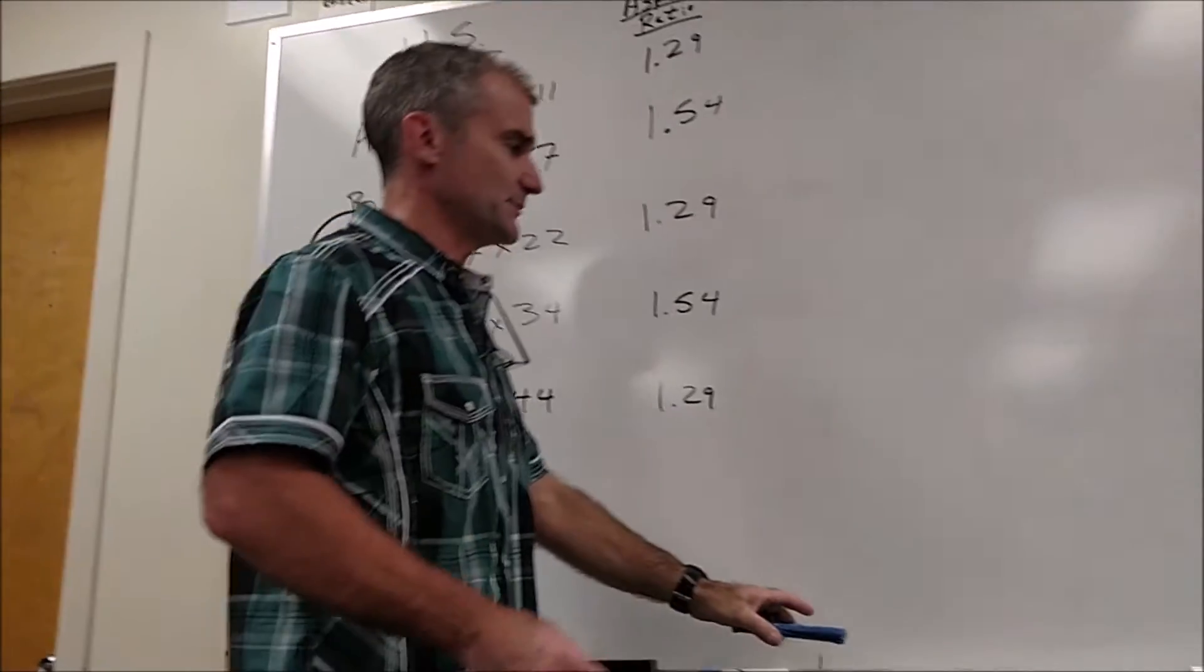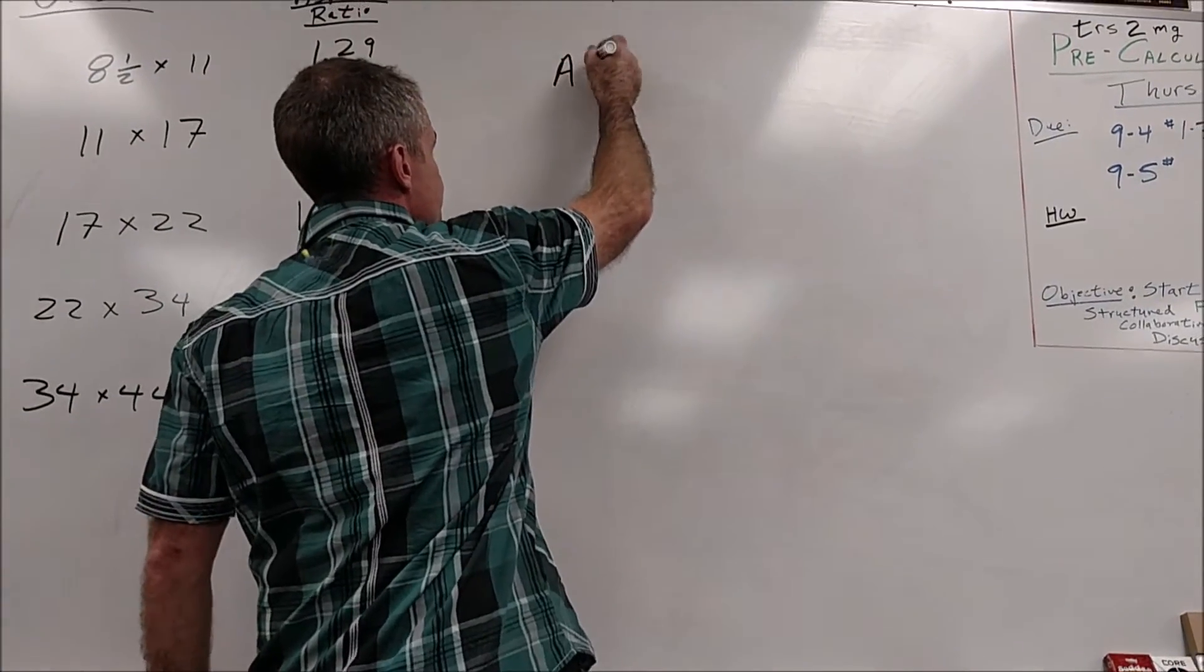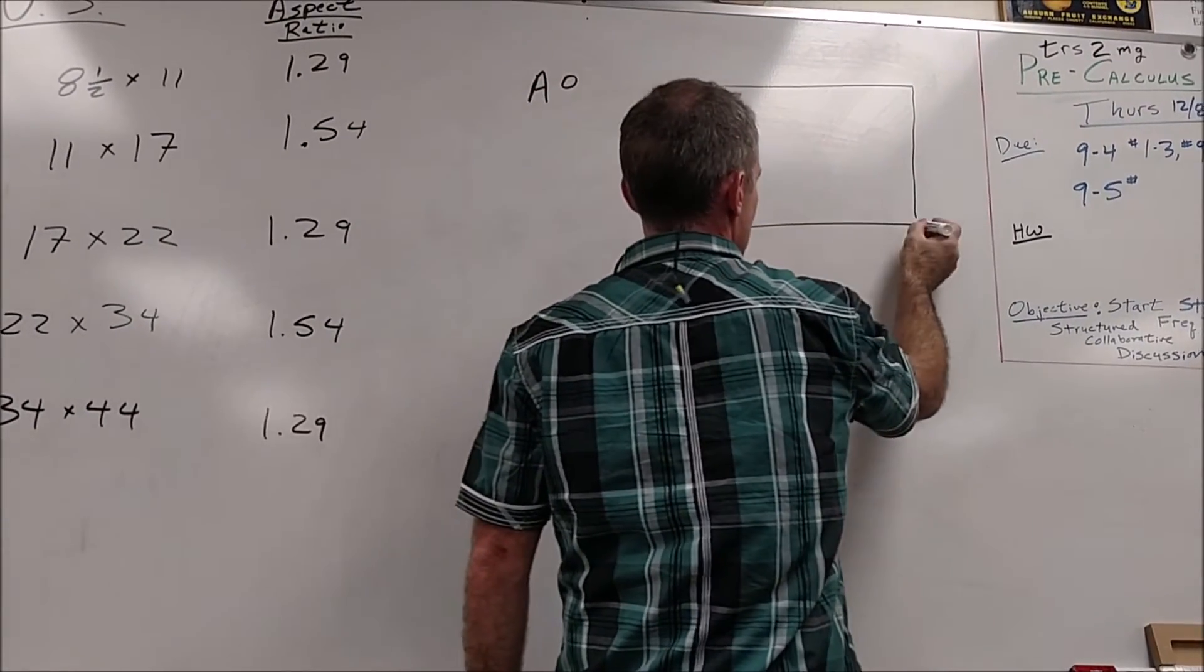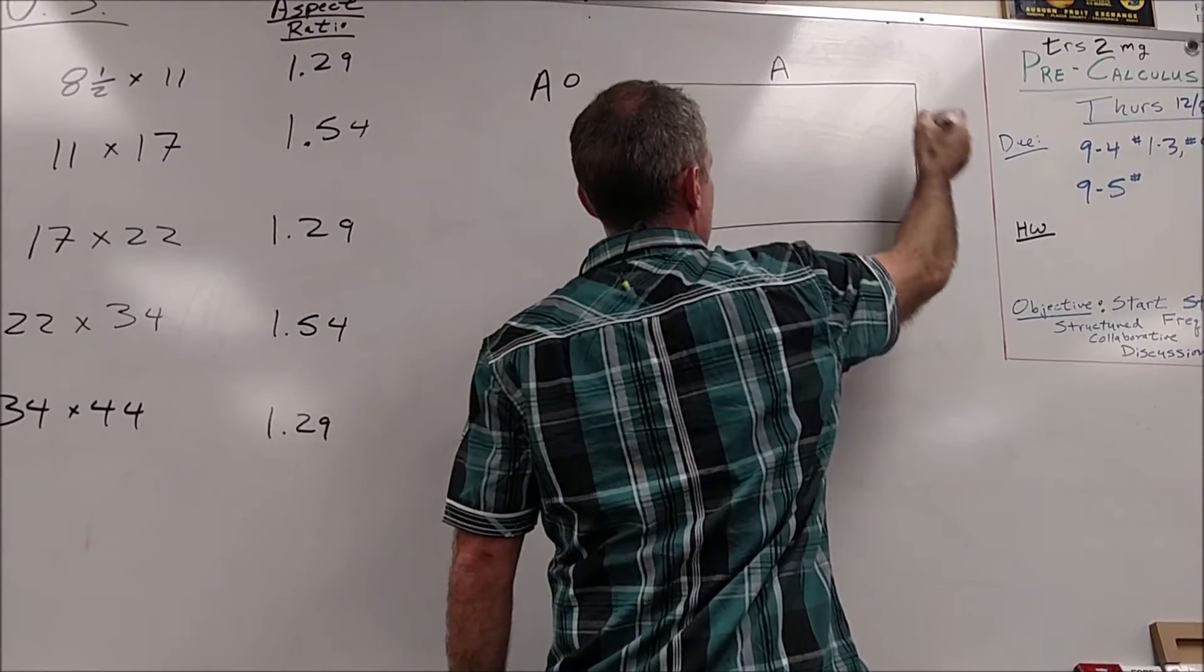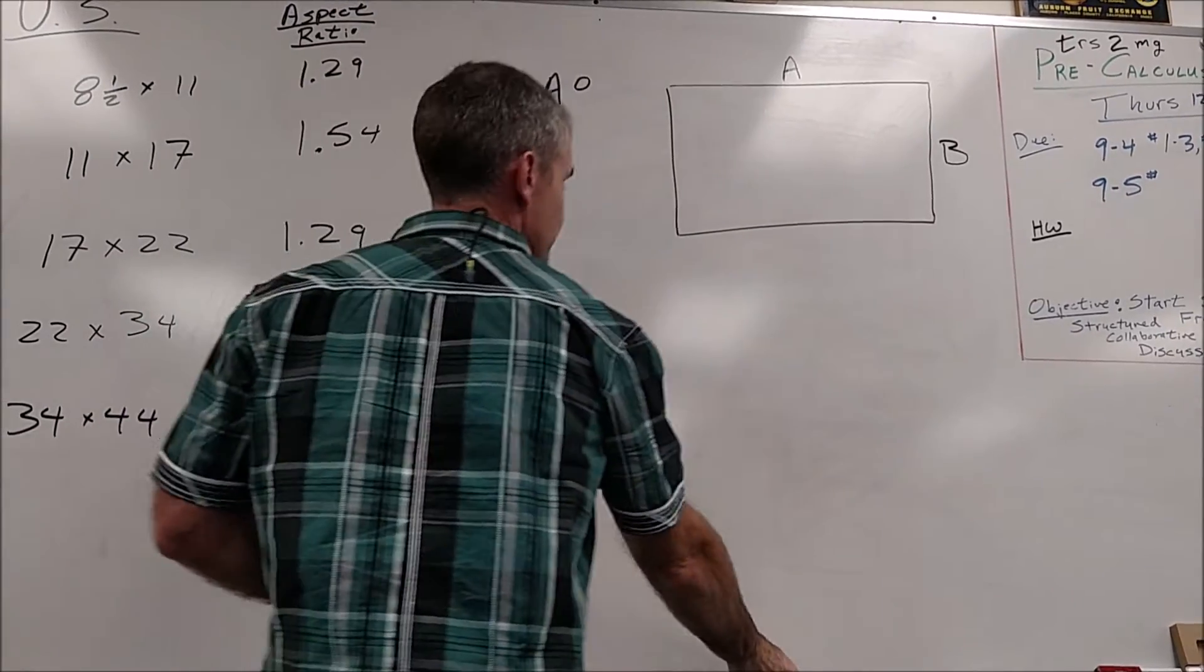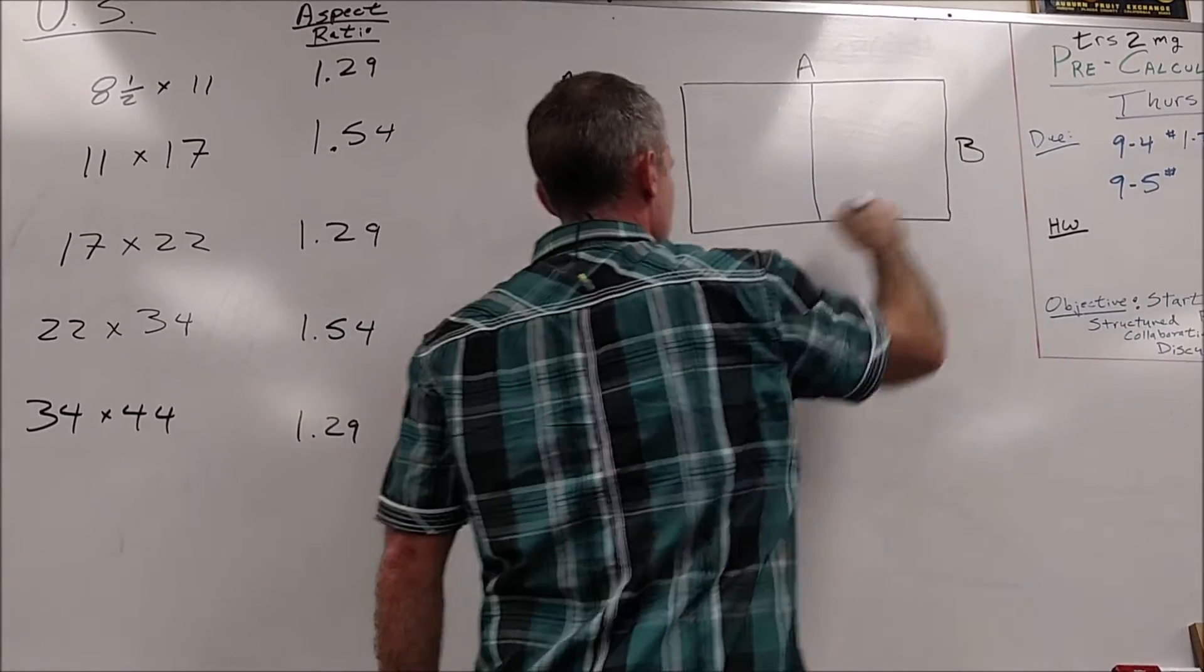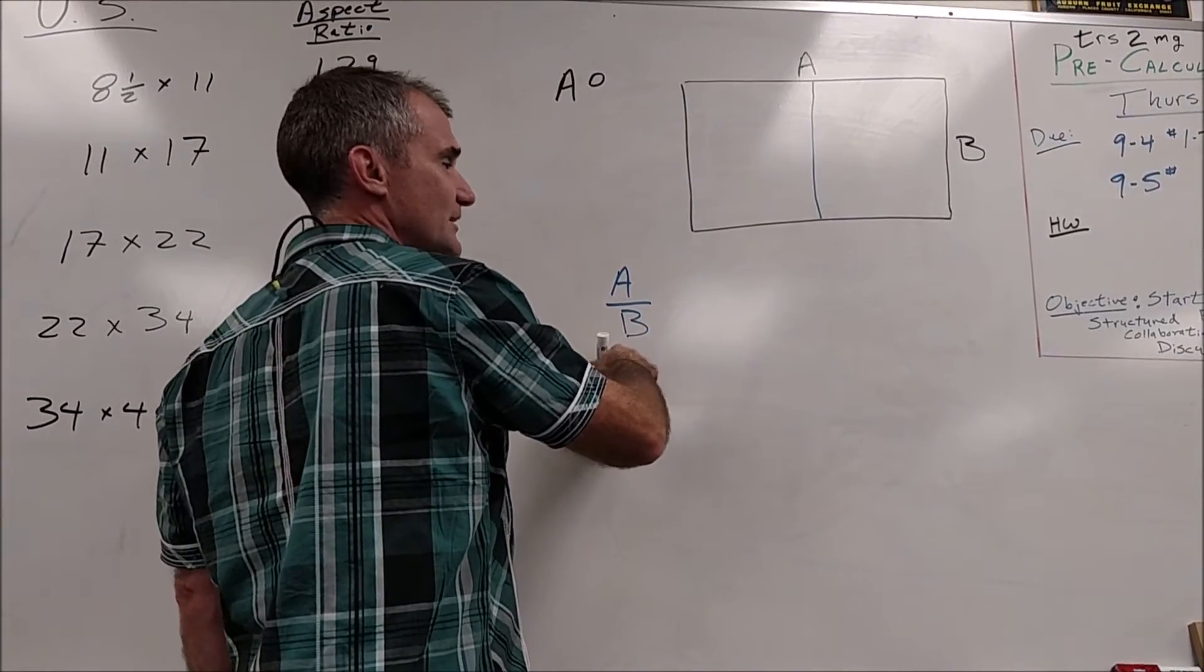However, the metric size paper is A zero is where they start, and the way it has to work is you want the ratio to be the same all the way down. So if the dimensions of this are A by B, then when I cut it in half I want the dimensions of this to be the same ratio. So the ratio of my first piece of paper is the length to width, A to B.